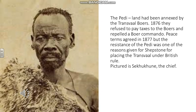Pictured in this slide is Sukun Hunay, the chief of the Peri. The Peri were a tribe who had had their land annexed or taken by the Transvaal Boers. After refusing to pay taxes to them, they were attacked by a Boer commando, but they managed to repel it. Peace terms were agreed, but the resistance of the Peri was one of the reasons given by Shepstone for why the Boers should become part of a federation protected by the British.